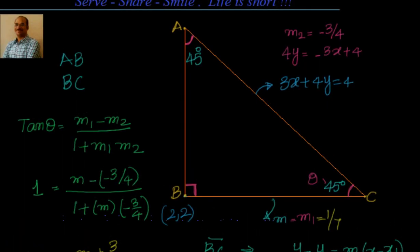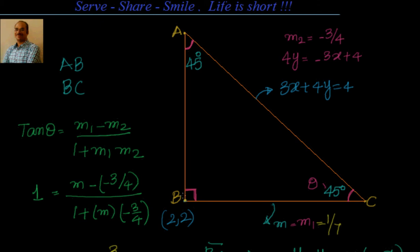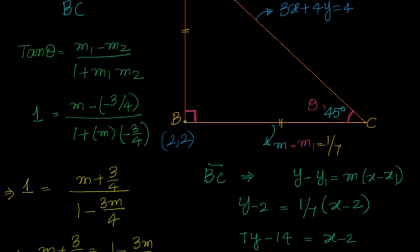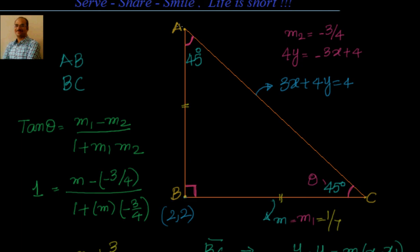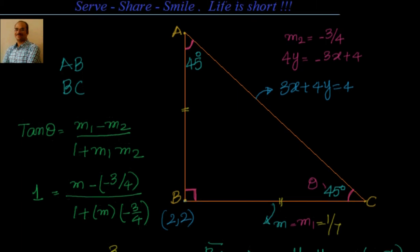So the equations of AB and BC are: equation of BC is x minus 7y plus 12 equal to 0, and equation of AB is 7x plus y minus 16 equal to 0. We were given the hypotenuse equation and the vertex at which the right angle is made. Since the angle between any leg and the hypotenuse of an isosceles right triangle is 45 degrees, we used the angle formula, found slope of BC as 1 by 7, then found AB as its negative reciprocal, both passing through point (2,2).